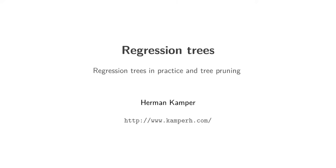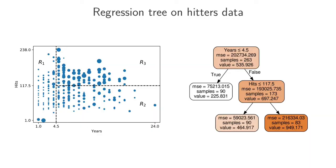In the last video we spoke about the algorithm used to construct regression trees. In this video I'm going to highlight some practical aspects. This example from before uses the hitter dataset which has baseball players, the number of years they've played and the number of hits they've made, with the corresponding salary. This regression tree was actually trained using the algorithm from the previous video.